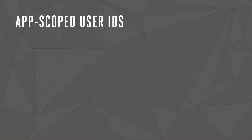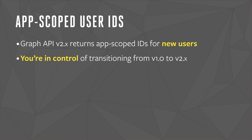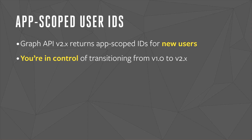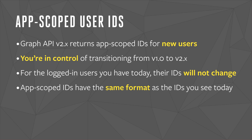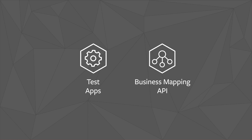We wanted to make this transition as easy as possible for developers, and so we followed these design principles. First, there's not going to be a sudden change — the first time you'll see an App-Scoped User ID is when a new user first logs into your app using the new Facebook login, meaning you're in control of when you transition to V2 and App-Scoped User IDs. Next, the IDs of people who have already logged into your app will not change — you may already have rows in your user table keyed off the Facebook ID, and we knew that changing these would have been disruptive. App-Scoped User IDs share the same format as the IDs you see today, so you don't need to make any changes to your database's columns. We also built Test Apps and the Business Mapping API for cases where you need to know the same user across multiple apps.